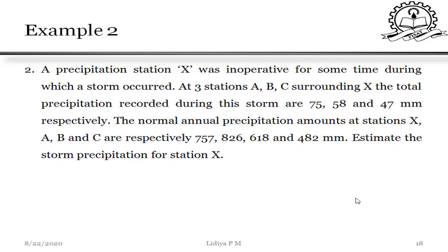Second question: a precipitation station X was inoperative for some time during which a storm occurred. At three surrounding stations A, B, and C, the total precipitation recorded during this storm are 75, 58, and 47 mm respectively. The normal annual precipitation at stations X, A, B, C are 757, 826, 612, and 482 mm respectively. Estimate the storm precipitation for station X — this is the missing data we need to find.